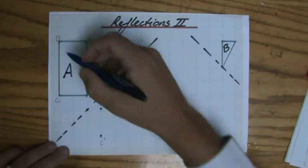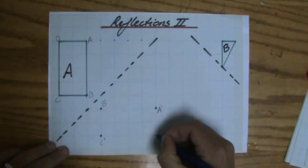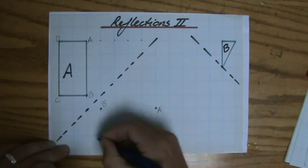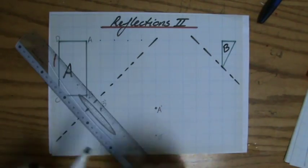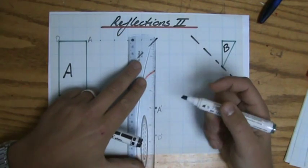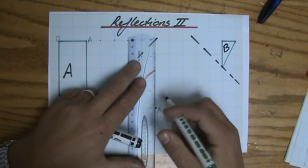Hopefully you realize D is going to go over there, because then I have my rectangle again. I'm going to check that in a second. I just want to tell you: with a reflection, your shape doesn't change, does it?